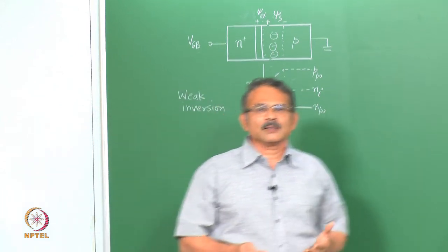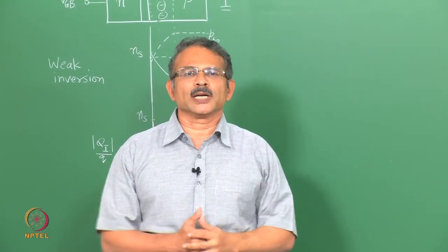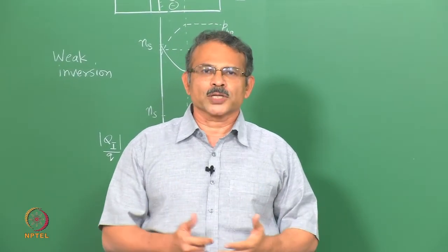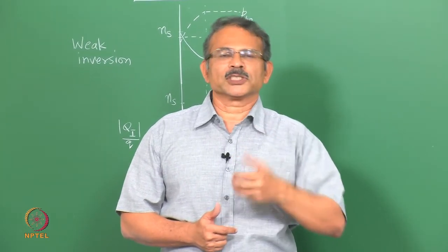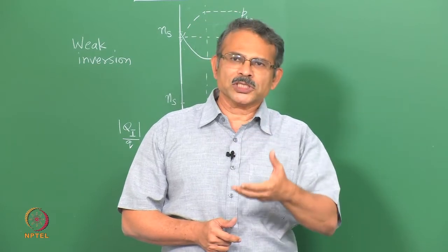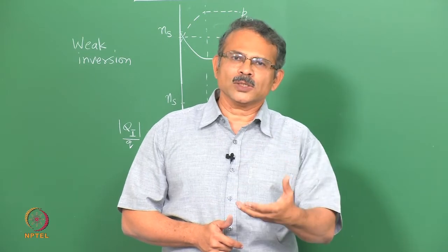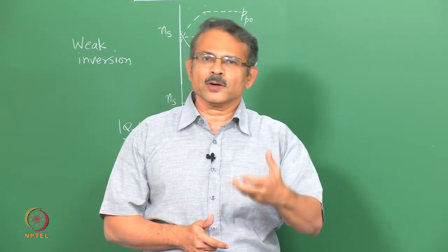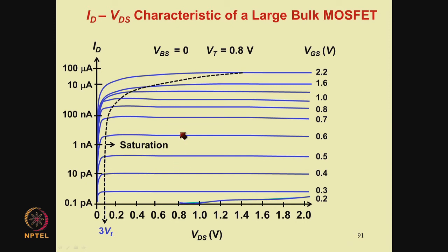The current from drain to source in the subthreshold region is because of diffusion. Diffusion means gradient of the inversion charge. Since the inversion charge itself varies exponentially with VGB, the gradient also varies exponentially with VGB, and therefore the current varies exponentially with VGB. This explains why the drain current in saturation in a MOSFET increases exponentially with VGB.